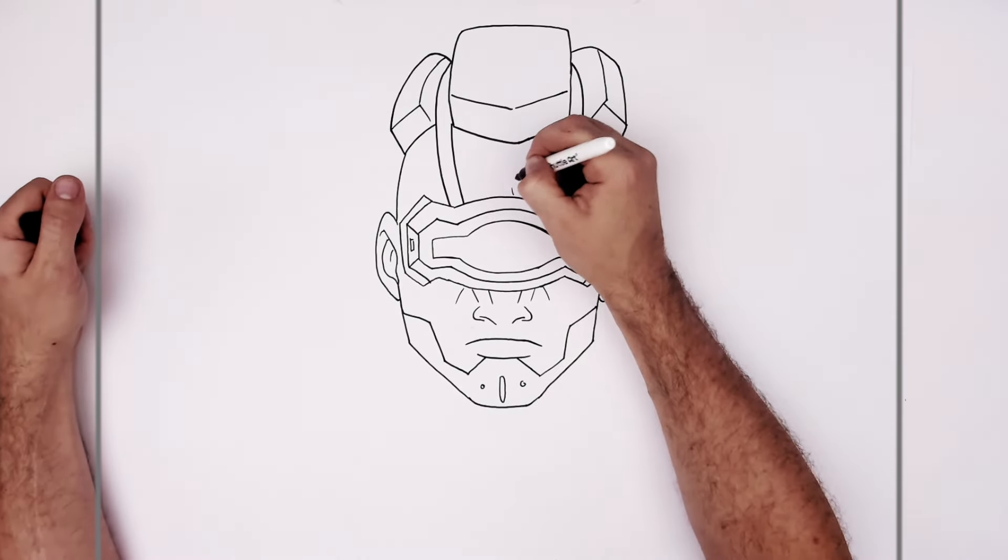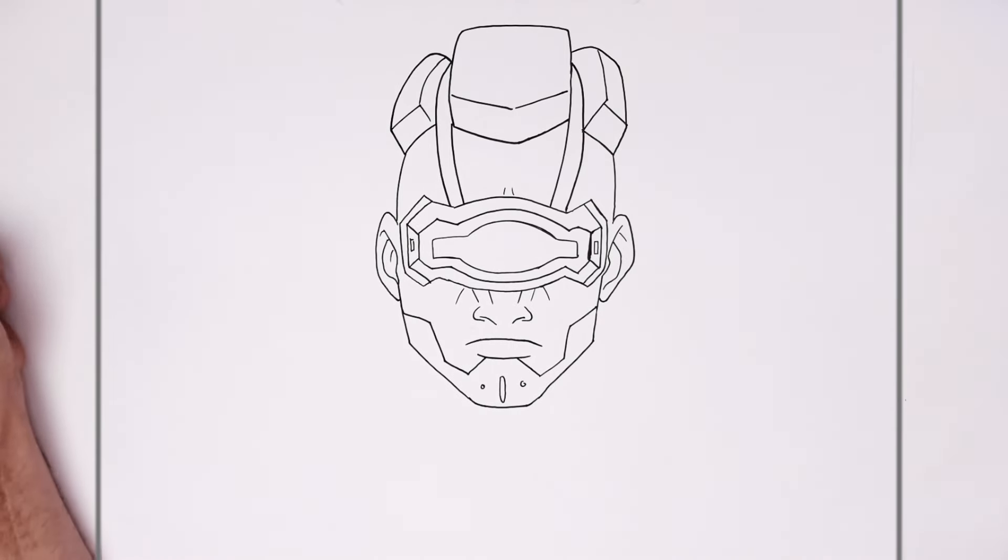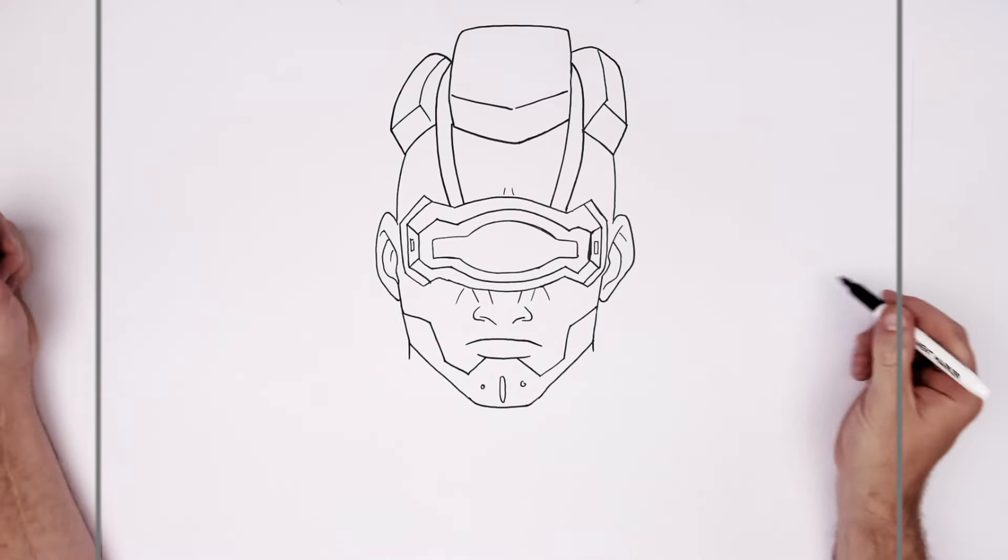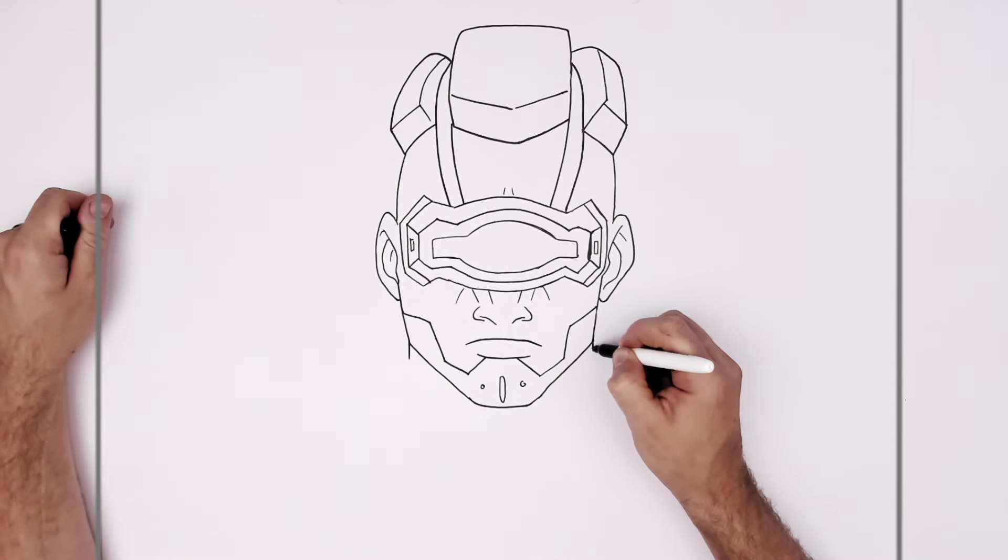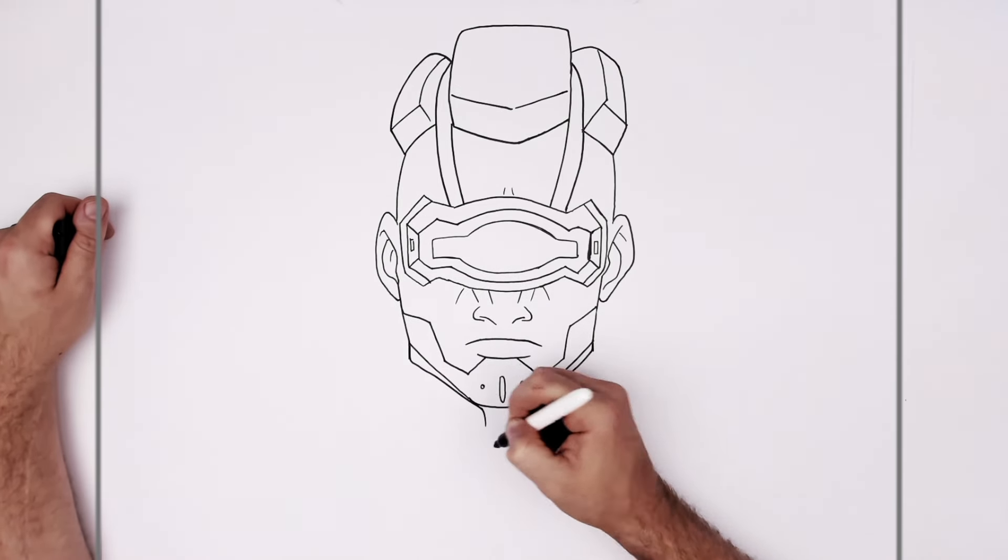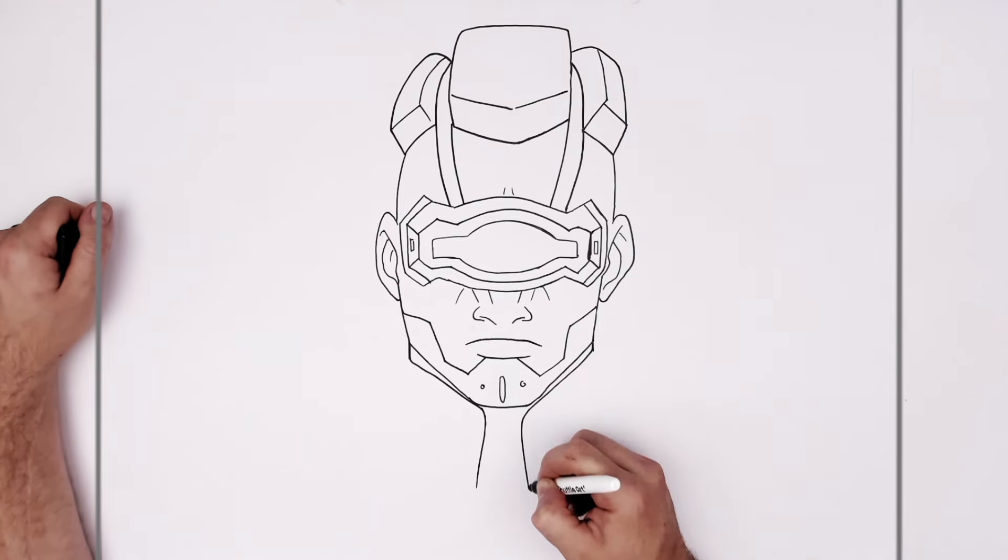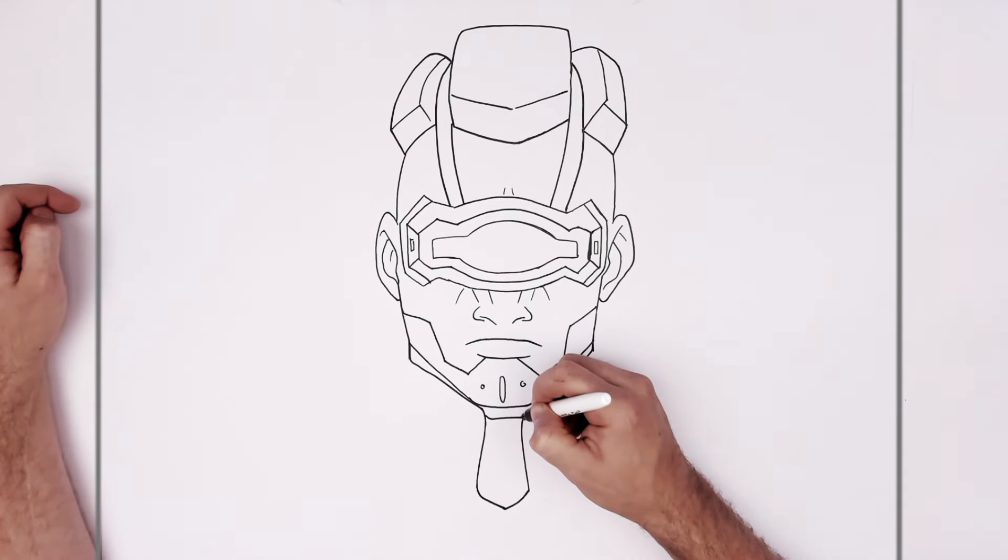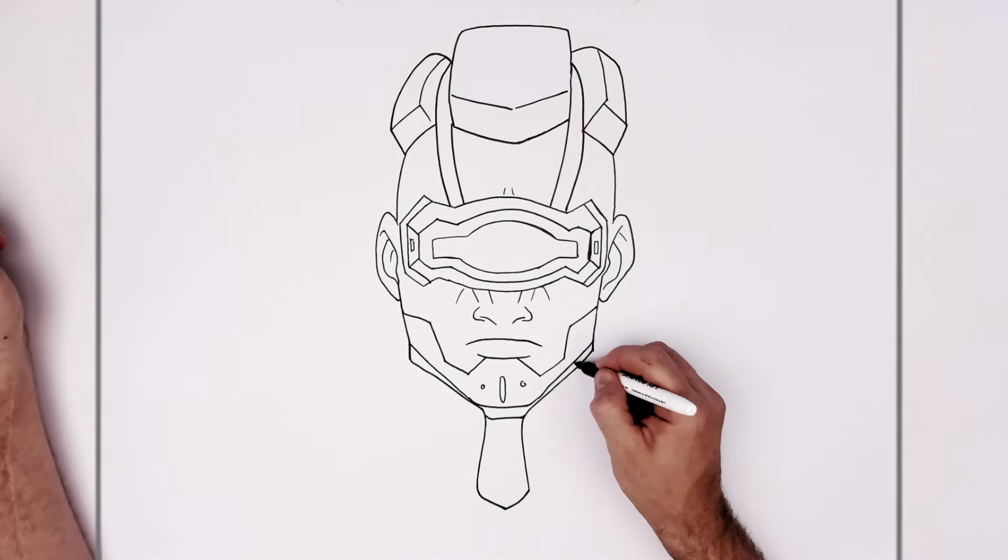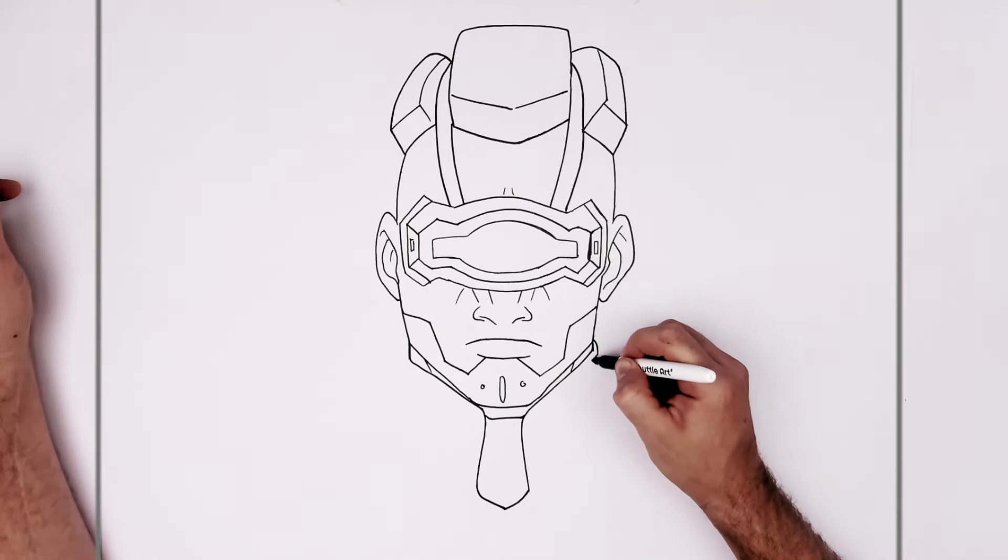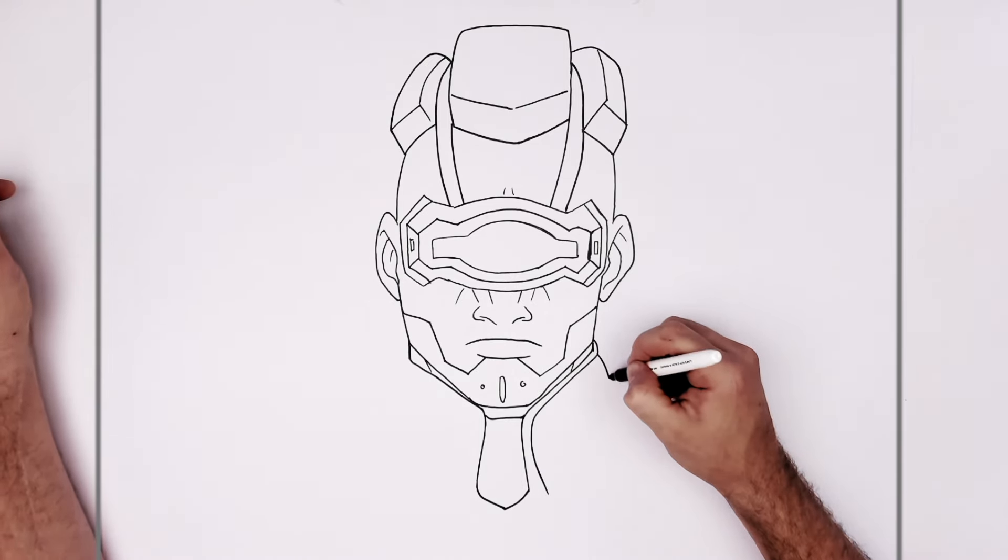So neck just comes down from his jaw, very wide. Neck disappears in behind his shirt line, which goes this way. Down to a little sort of point in the middle. And then there's a line coming across here. I think he's got some neck lines or something in there. And then shirt meets the grey collar.